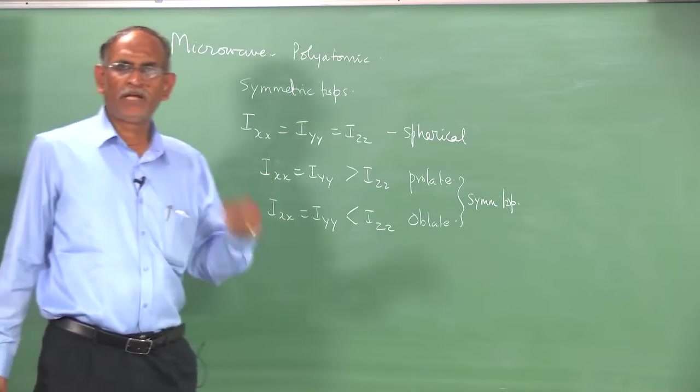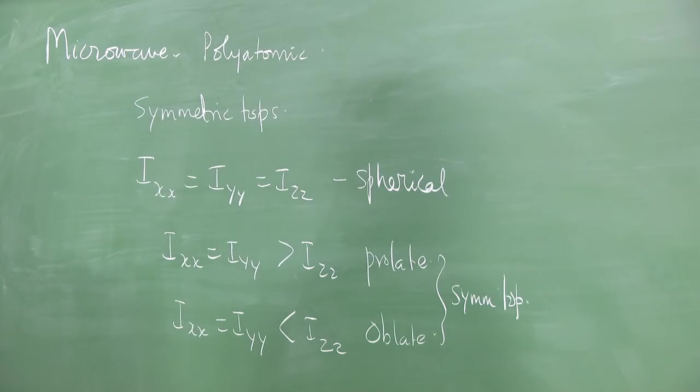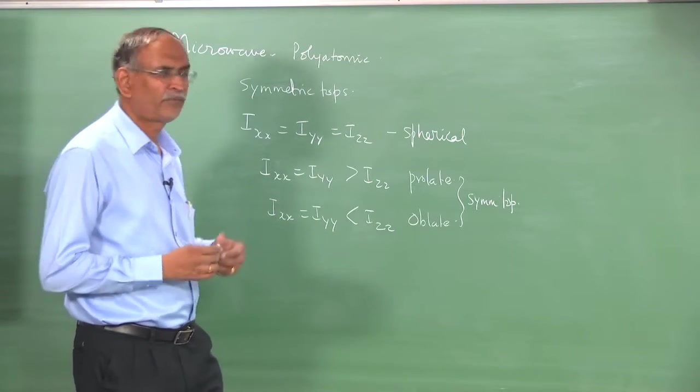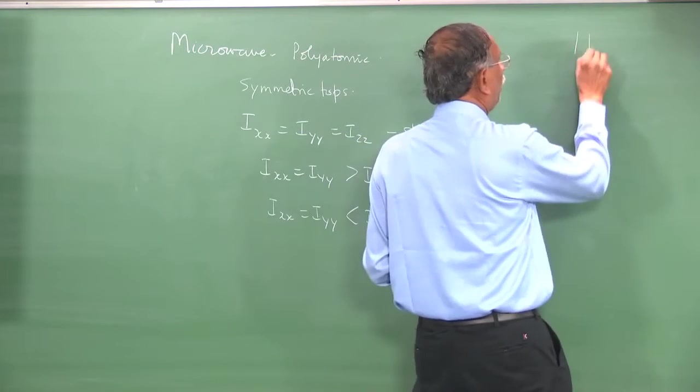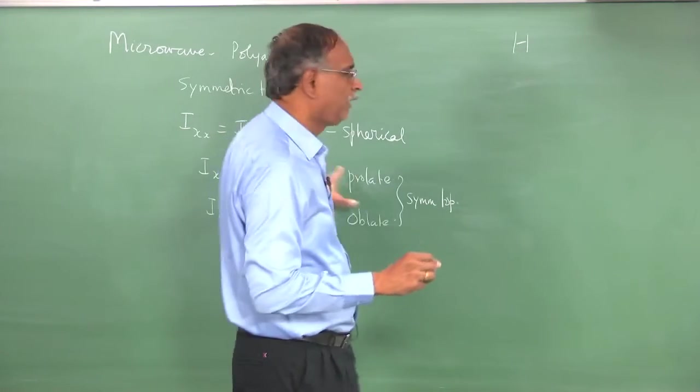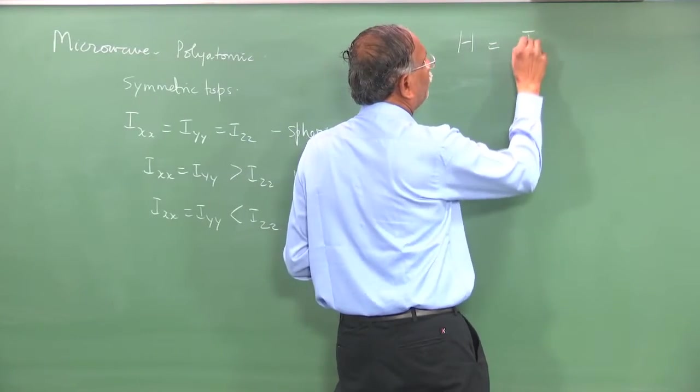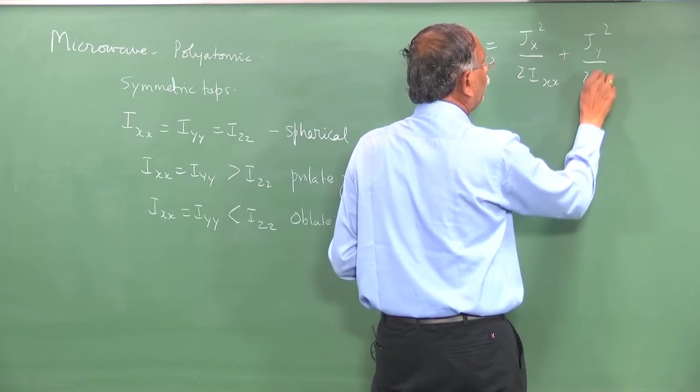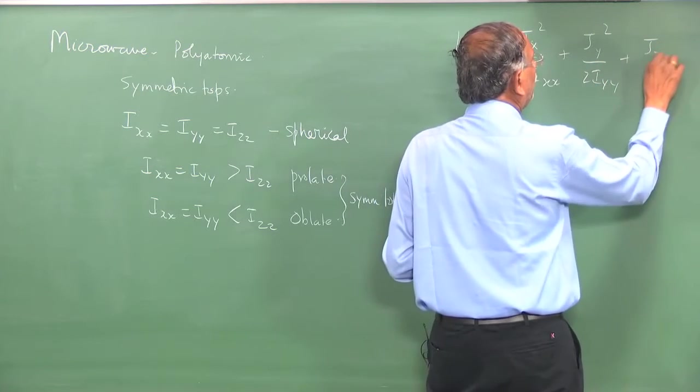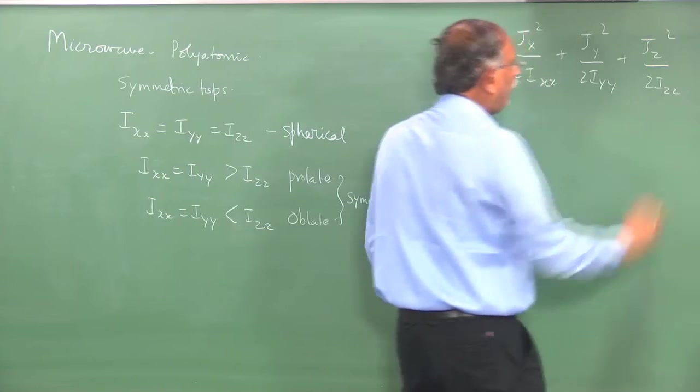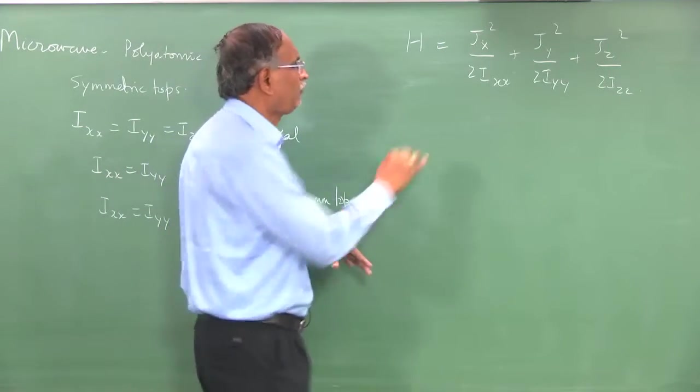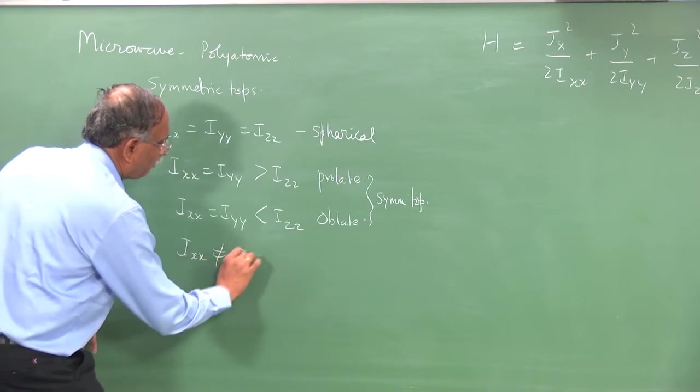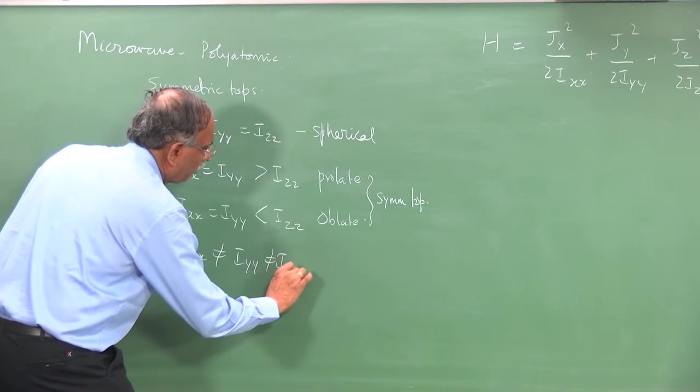The spectrum of symmetric top and the energy levels are easy to calculate because the Hamiltonian for the symmetric top has a special form. For a molecule which had all three moments of inertia being different, the Hamiltonian is written as j_x²/2I_xx + j_y²/2I_yy + j_z²/2I_zz. And this I did not solve in this course, because it is called an asymmetric top. The three cases I_xx ≠ I_yy ≠ I_zz is called asymmetric top.